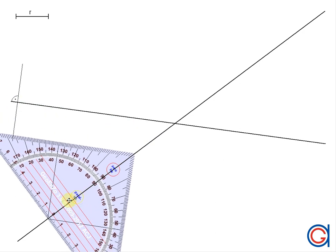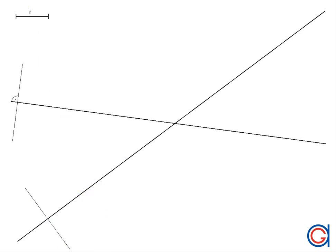Now we are going to do the same process again on the other intersecting line above and below. The only stipulation is this perpendicular line must be longer than the given radius r. Again, we will mark it with the 90 degree symbol.